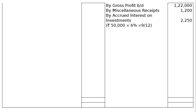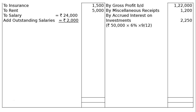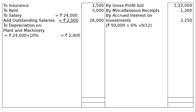On the expense side: insurance Rs 1,500; rent Rs 5,000; salary Rs 24,000. Referring to adjustment 2, salaries outstanding are Rs 2,000 — we add outstanding salaries Rs 2,000 to get total salaries of Rs 26,000 in the final column. Next, depreciation: machinery at 10% on Rs 24,000 = Rs 2,400; furniture at 20% on Rs 1,500 = Rs 300. Total depreciation in the final column is Rs 2,700.